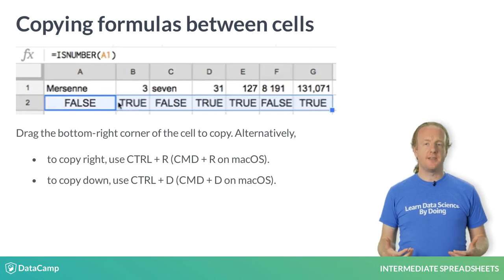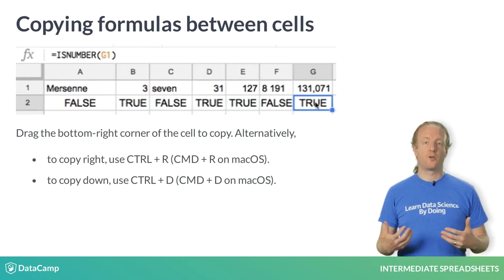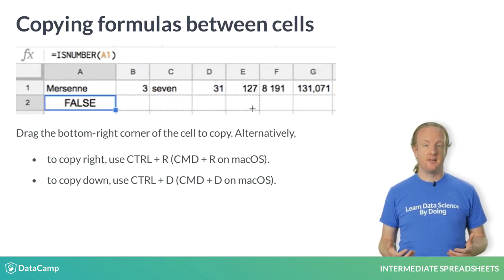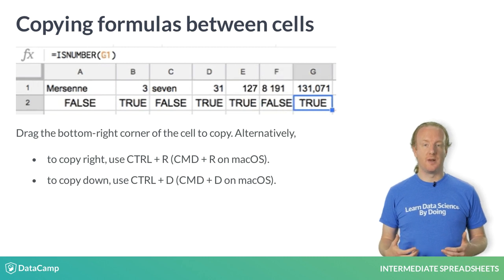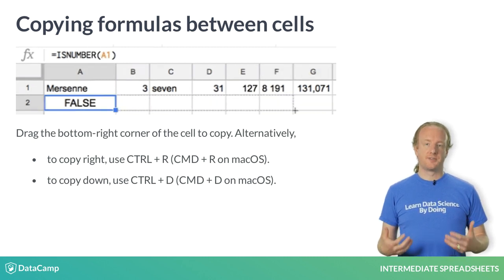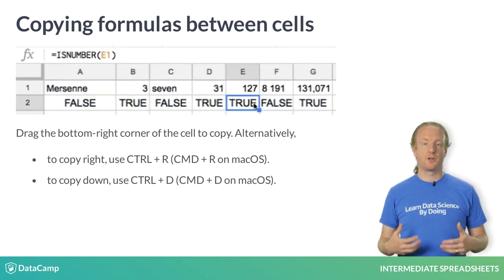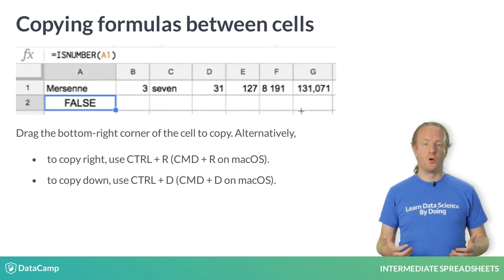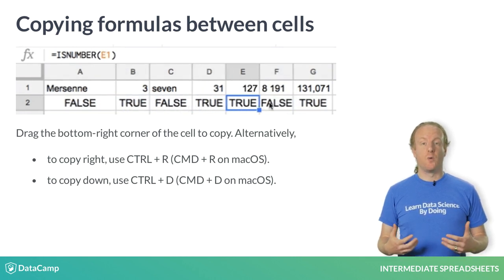One Google Sheets technique you need to know throughout this course is how to copy a formula across cells. When you select a cell, it has a blue square in the bottom right-hand corner. Click that square and drag it to copy the formula to new cells. Alternatively, you can select both the cell containing the formula and the cells you want to copy to, and press Ctrl+R to copy right, or Ctrl+D to copy down. If you use macOS, the equivalent commands are Cmd+R or Cmd+D.